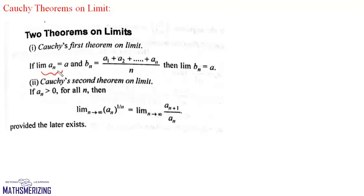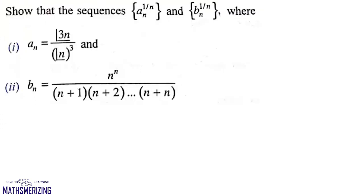The second theorem says: if a_n is a positive number for all n, then the limit as n tends to infinity of a_n to the power 1/n is the same as the limit as n tends to infinity of a_(n+1) upon a_n. Now in this question we need to find the limit of the sequences a_n to the power 1/n and b_n to the power 1/n.